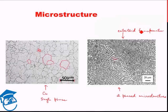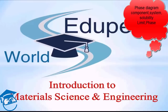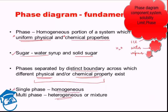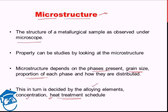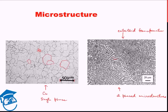To summarize today's lecture: we began with basic definitions — component, system, solubility limit, phase, and different kinds of phases. We examined the phase diagram for water and learned how to read it and extract information. Then we explored microstructure, its relevance to material properties, and saw examples of single-phase and two-phase microstructures. Next lecture we will take the study further from here. Till then, have a great day — goodbye.